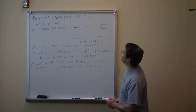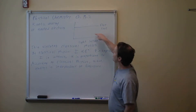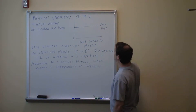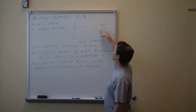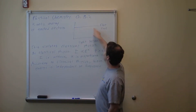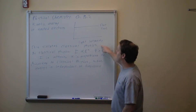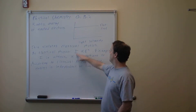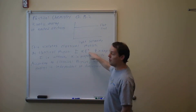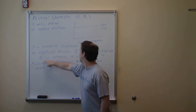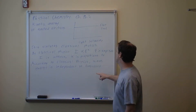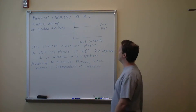Here's another graph: kinetic energy of each ejected electron versus light intensity. It's a flat line — the kinetic energy does not depend on light intensity. As long as you're getting photons, the kinetic energy of each single photon is the same. This violates classical physics, where the intensity of a wave is proportional to the amplitude — I ∝ A² — and wave energy should be independent of frequency, since it just depends on amplitude. Notice there is no frequency in that formula.